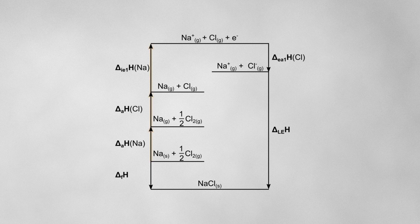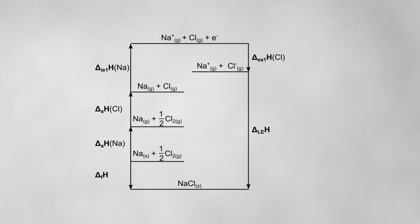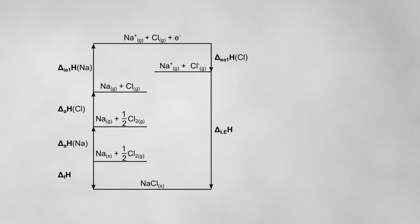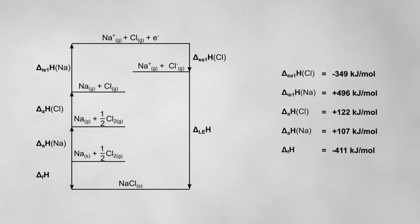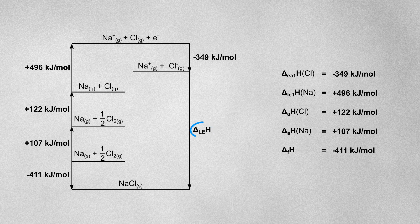Arrows pointing upwards represent endothermic enthalpy changes, and arrows pointing downwards represent exothermic enthalpy changes. We'll now need to assign values to each of these arrows using given values of enthalpy changes. Once this is done, we can work out the missing lattice enthalpy.